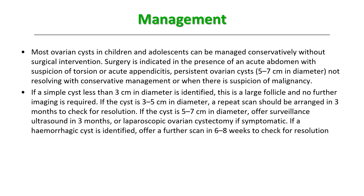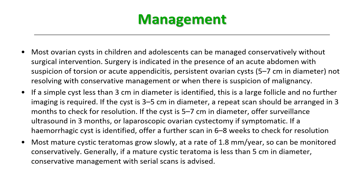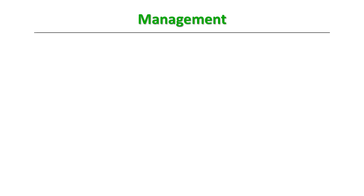If the cyst is 5 to 7 centimeters, arrange a surveillance ultrasound in 3 months or consider laparoscopic ovarian cystectomy if symptomatic. If a hemorrhagic cyst is identified, offer a further scan at 6 to 8 weeks to check for resolution. Most mature cystic teratomas grow very slowly at around 1 to 2 mm per year and can be monitored conservatively. Generally, if a mature cystic teratoma is less than 5 centimeters, conservative management with serial scans is advised.